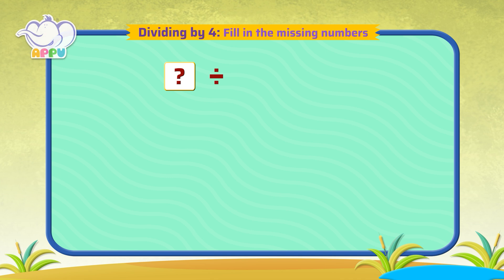Which number divided by 4 gives 5? We have to find out how many beads, when divided into 4 groups, gives us 5 beads.